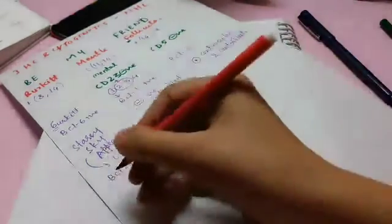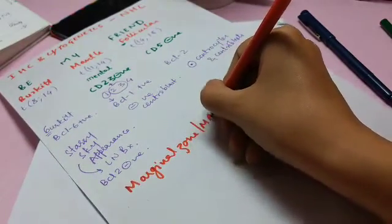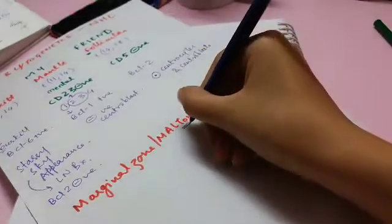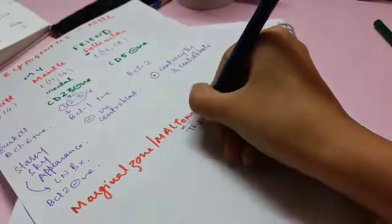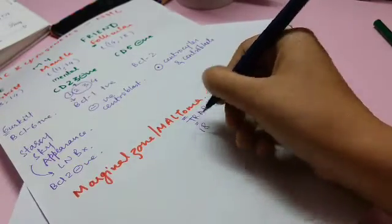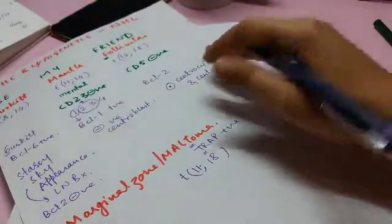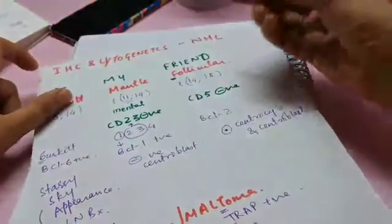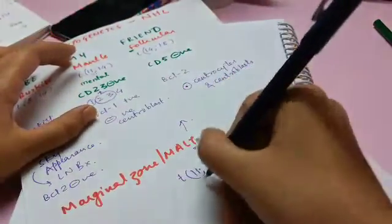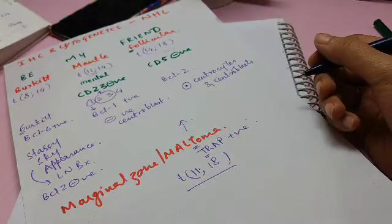Another fourth type of NHL is marginal zone lymphoma or MALT-oma. These MALT-omas are like MALT-TRAPomas, so they are TRAP positive. And this T will help you remember 18. I know it doesn't sound very well, but this has translocation 11-18. It is basically a combination of the 11 from mantle and 18 from follicular. So this MALT-oma is trapped between mental and follicular and they give a translocation of 11-18.